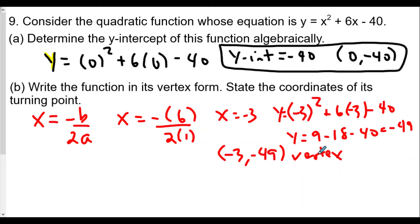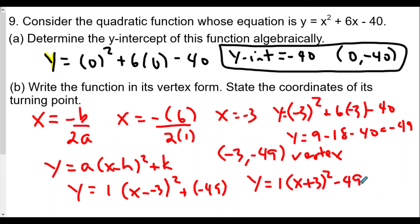The vertex form is y equals a times (x minus h) squared plus k. Here a is 1, so we have y equals 1 times (x minus negative 3) squared plus negative 49. This is the vertex form of the function, and the vertex is negative 3 comma negative 49.